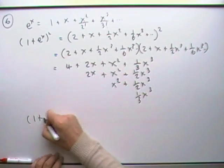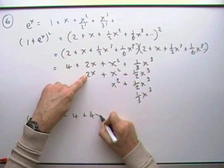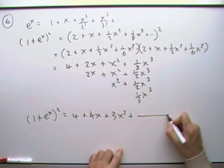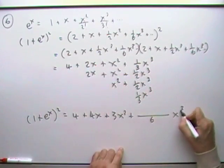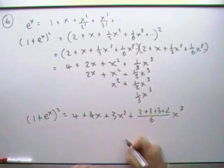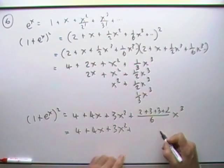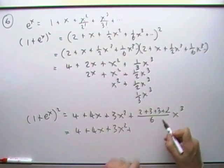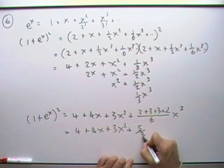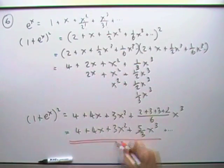So we'll just add it all up then. So for my 1 plus e to the x squared, I've got 4 plus 4x plus 3 lots of x squared plus a whole bunch of 2s and 3s. That's going to be 6s of x cubed. How's that going to be? So I'm going to have a 2 and a 3 and a 3 and a 2, so I'll have to write it out again. 4 plus 4x plus 3x squared plus, and that's going to come to 10, 10 over 6, half it, 5 up and 3, 5 up and 3 x cubed. And there would be some other terms. So there it is for question 6.